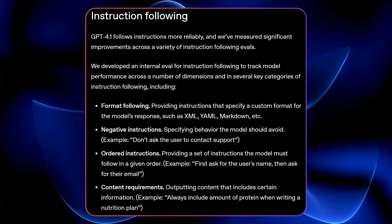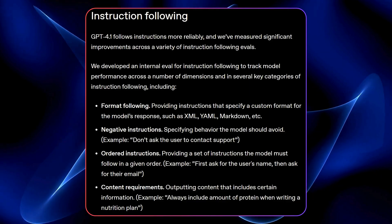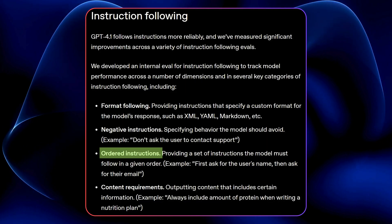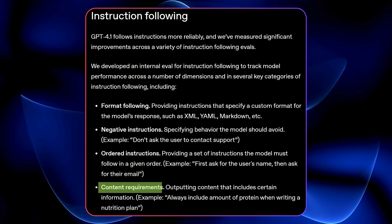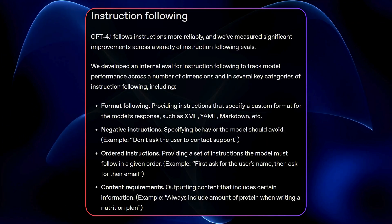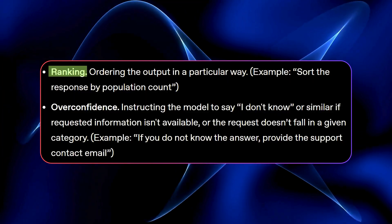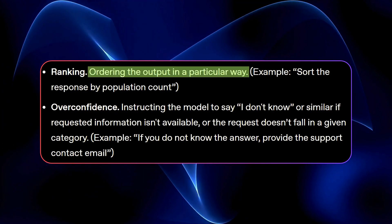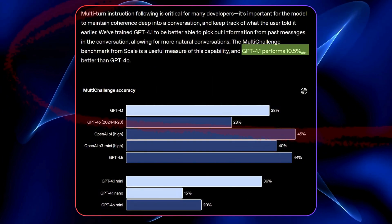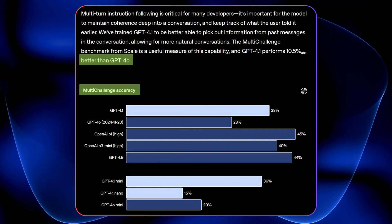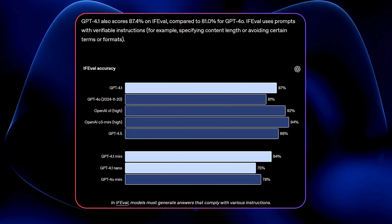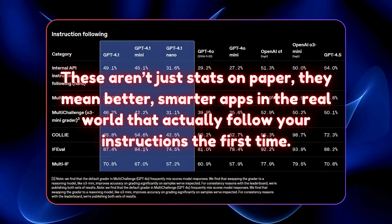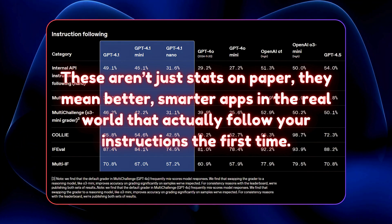Now let's talk about one of the trickiest parts of AI: following instructions. We've all had those moments where an AI gives you results that don't quite match what you asked for. Well, GPT 4.1 is here to fix that. Whether it's following ordered instructions, dealing with negative commands, or handling content requirements, this model does it all with precision. One area where it shines is ranked instructions — a game changer for making sure AI doesn't miss the details. GPT 4.1 improved by 10.5% over GPT 4.0 in multi-challenger benchmarks and achieved an impressive 87.4% on IFEVAL accuracy, up from GPT 4.0's 81%. These aren't just stats on paper — they mean better, smarter apps that actually follow your instructions the first time.